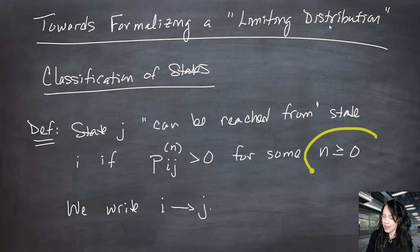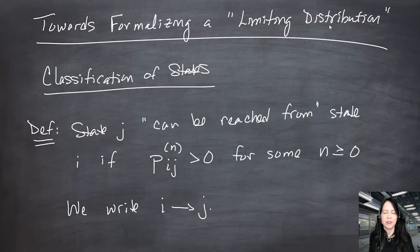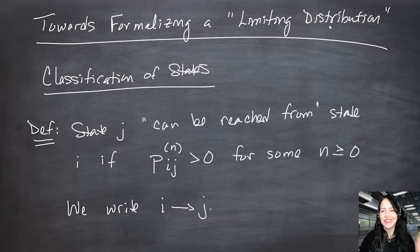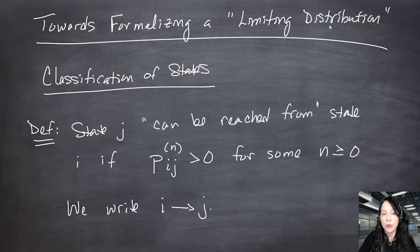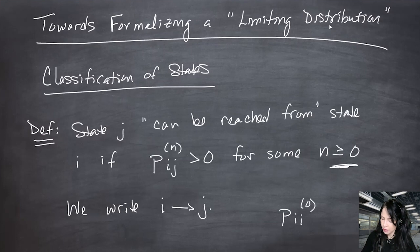State j can be reached from state i if you can get there with some positive probability in some number of steps — it doesn't have to be one step. So j can be reached from i if the n-step transition probability p_{ij}^{(n)} is positive for some integer n ≥ 0. We write i → j. It's not a mistake that n equals zero is allowed: every state can be reached from itself, because the probability of going from i to i in zero steps is one.